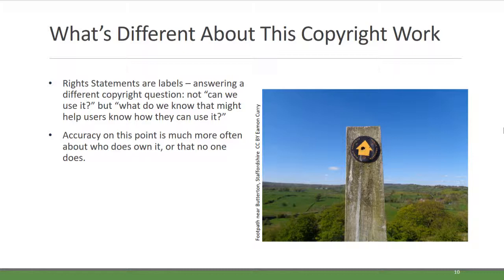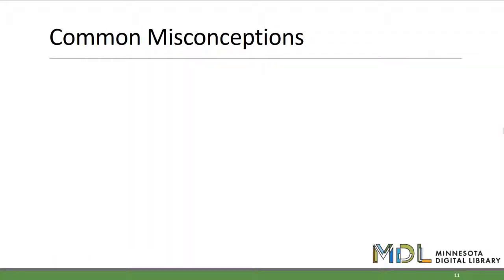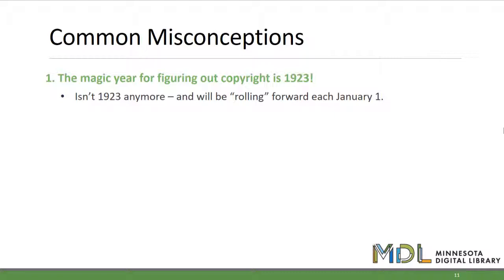The illustration here is of a marker for a public footpath through a field in the United Kingdom. As we switch gears from our previous work focused on whether we can use materials to posting signage for everyone, some common misconceptions come up and we should address them right off the bat. One common misconception related to our collections is that there's a magic year for figuring out whether a work has a copyright or not, and that magic year is 1923. But it isn't 1923 anymore. As of January 1st, 2019, it's 1924, and it will be moving forward each year on January 1st. Another trick about this magic year is that it actually only ever applied to published works. When looking at unpublished works, the 1923 year has rarely been relevant.